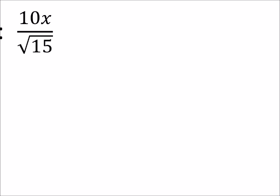So right now I have an irrational number in the denominator, which is the square root of 15. So all I'm going to do is multiply this by the square root of 15, and I'll multiply the numerator by the square root of 15 as well.